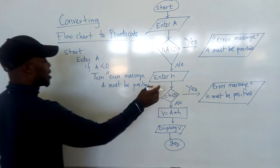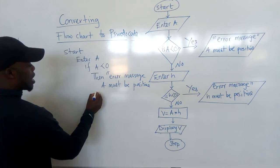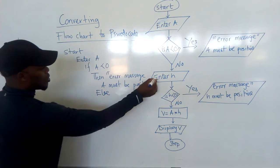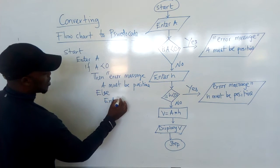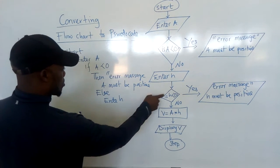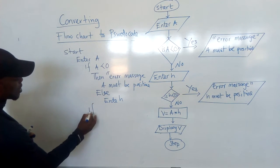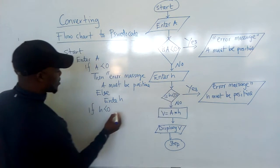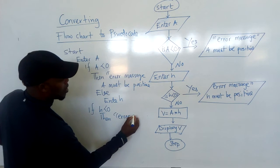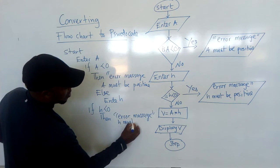And then there are two options — here it says yes, and here it says no. When copying the no branch, you write ELSE. Else: enter H. So from this point, when you enter H, there is also a question: is H less than zero? You write: IF H is less than zero. There are two answers. You say THEN, and copy what is here — error message: 'H must be positive'.